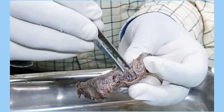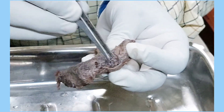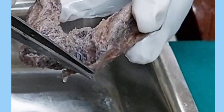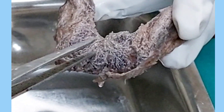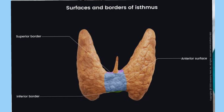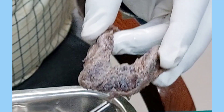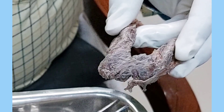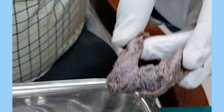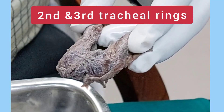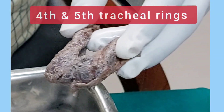The isthmus is quadrilateral, having four borders: an upper border, a lower border, and two lateral borders which are merged with the lateral lobes of the thyroid gland. It also has an anterior surface and a posterior surface. The isthmus is at the level of the second and third tracheal rings, but the base extends up to the fourth and fifth tracheal rings.